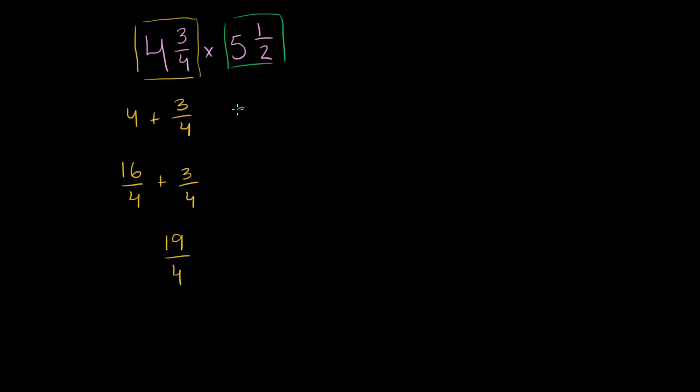5 and 1 halves is the same thing as 5 plus 1 half. 5, if I multiply it by 2, is the same thing as 10 halves. 5 is 10 halves, and then we're still going to add plus 1 half. And then 10 halves plus 1 half is 11 halves. And once again, a faster way of doing it, you could have said 2 times 5 is 10 plus 1 is 11, 11 halves. And now we can multiply, they're both improper fractions.